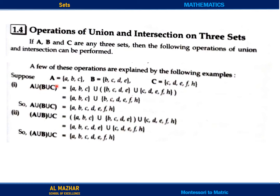We have three sets: set A, set B, and set C. Now how many union operations are there? A union — when we take A union, we take A union B union C. So A's elements we will keep, and then we create union of B and C elements and get them together.